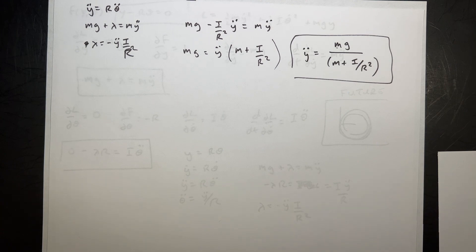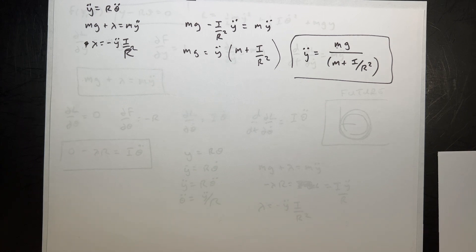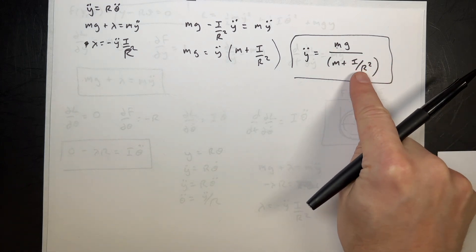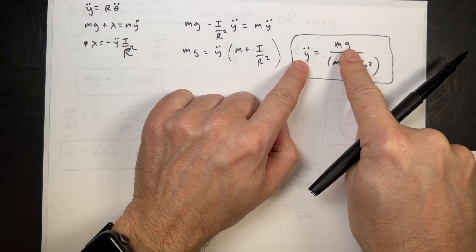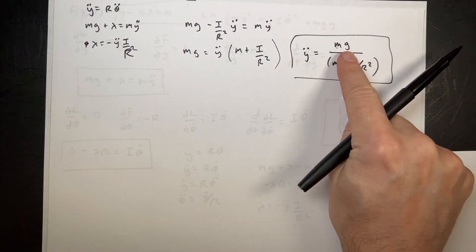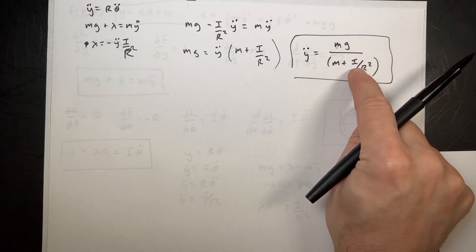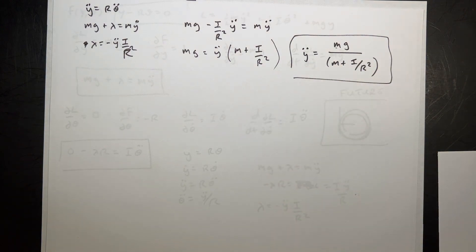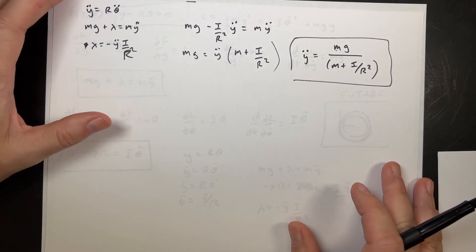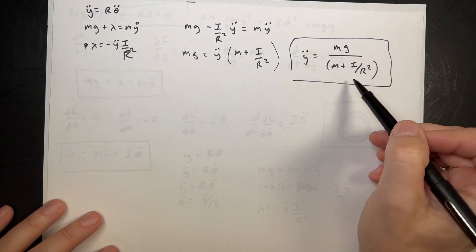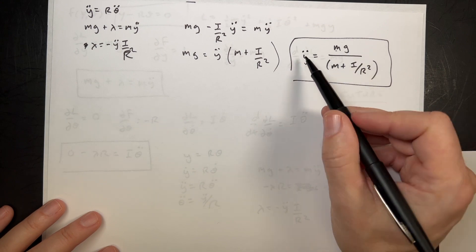Let's check: if there's no rotational term — if the moment of inertia term goes to zero — then Y-double-dot equals G, which is free fall. That is what I'd expect. As the moment of inertia increases, the acceleration decreases. The greater the moment of inertia of the disk, the lower the acceleration. The units also work out: everything has units of mass in the denominator, giving acceleration. Looks good.